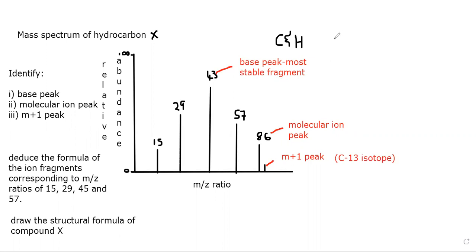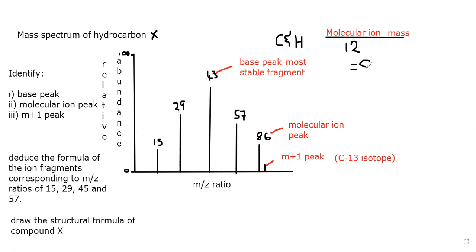To know how many carbon atoms are present, divide the molecular ion mass by 12. To get the amount of carbon atoms present, you simply divide the molecular ion mass by 12. In this case, the molecular ion is 86, divided by 12, which gives you 7.16.